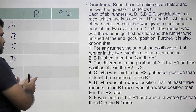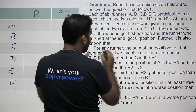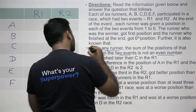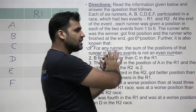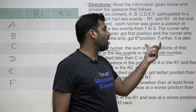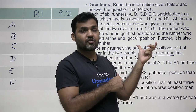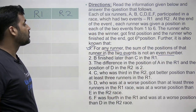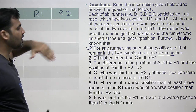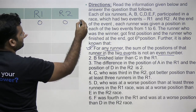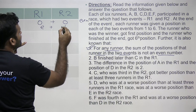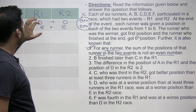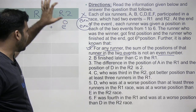It is also known that for any runner, the sum of the positions of that runner in the two events is not an even number. That's a very important piece of information that you need to interpret carefully. You need to understand how this information relates to the table we are trying to fill. How do you get the sum of two values as an even number? Either both numbers are odd — odd plus odd equals even — or even plus even also equals even.